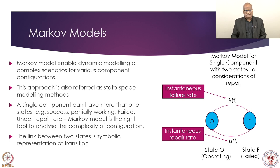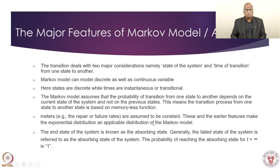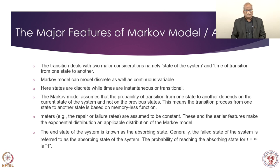The link between two states is a symbolic representation of a transition. The major Markov features are: it deals with transitions considering the state of the system and the time of transition — these two aspects are fundamental. It can model both discrete and continuous events, and the transition probability in Markov models is based on the exponential model.